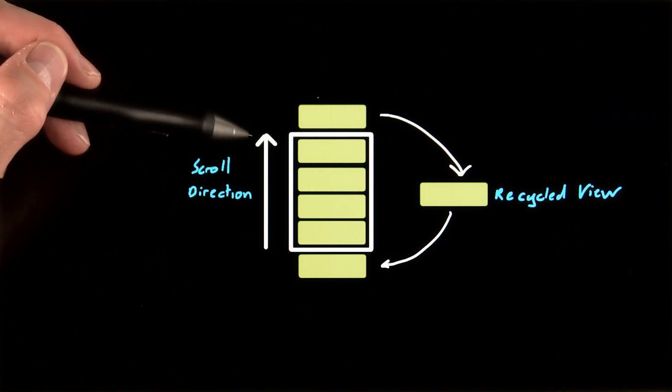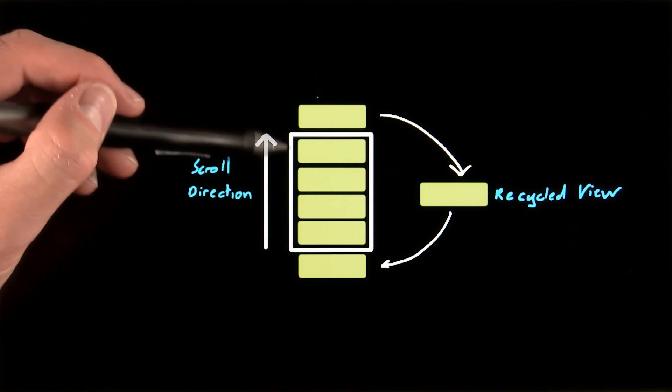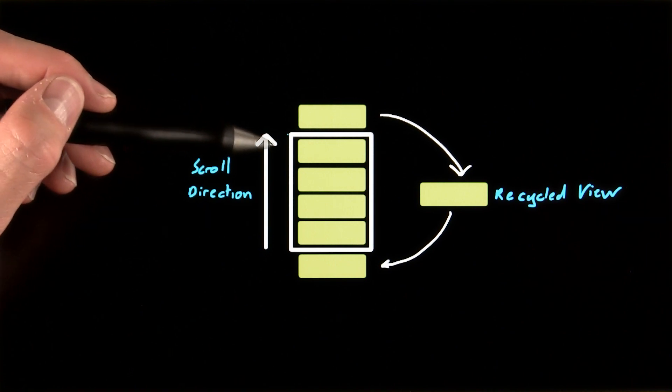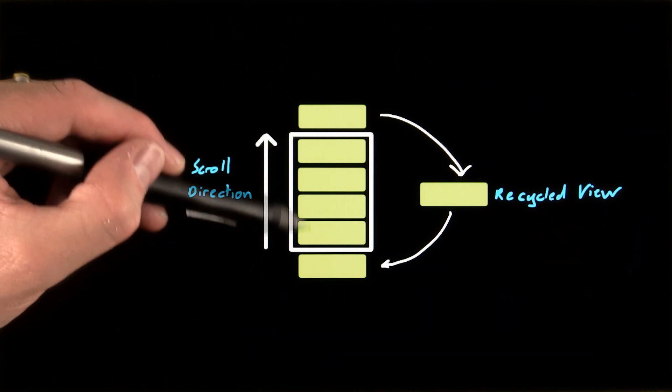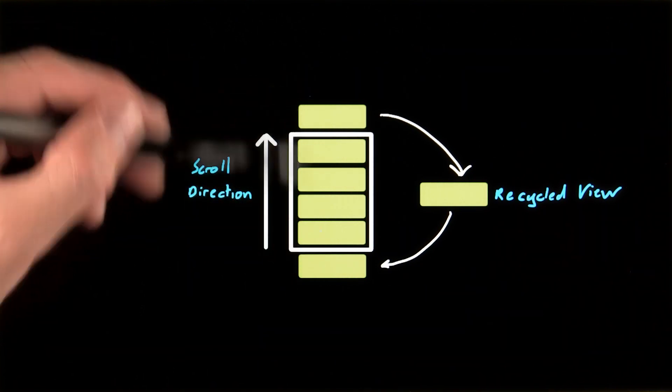So rather than having to create and then hold in memory each item of the list as it comes into view, we only need to do the creation step for the number of visible items and a couple on either side.